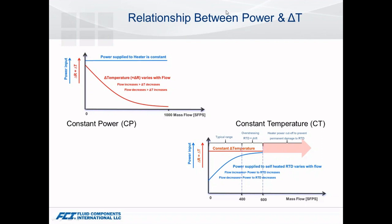This next slide shows the relationship between those designs. With constant power, we're putting a fixed current into the heater, and as flow increases, you see the delta T change — that delta T is able to go out a bit further in our measurements, up to a thousand standard feet per second. On the constant temperature side, we're maintaining that temperature differential and putting current into it in relationship to the flow, but there are some potential limits on your high-end flow rate capability. You also typically want to limit the amount of current going into that sensor to avoid pre-aging sensors, which would lead to potential drift and failure.